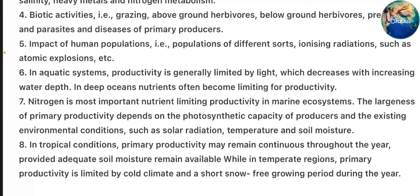In aquatic systems, productivity is generally limited by light which decreases with increasing water depth. In deep ocean, nutrients often become limiting for productivity. Nitrogen is the most important nutrient limiting productivity in marine ecosystems. The largeness of primary productivity depends on the photosynthetic capacity of producers and the existing environmental conditions, such as solar radiation, temperature and soil moisture. In tropical conditions, primary productivity may remain continuous throughout the year provided adequate soil moisture remains available.